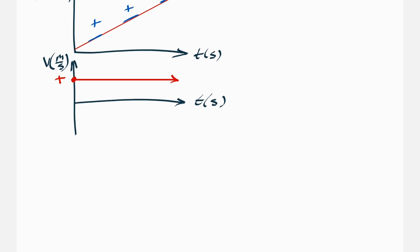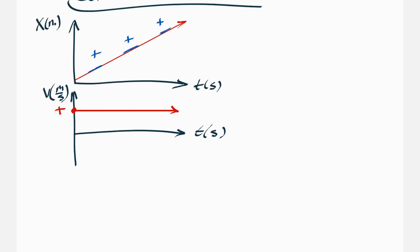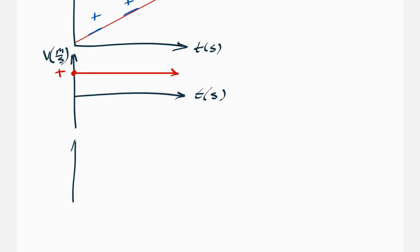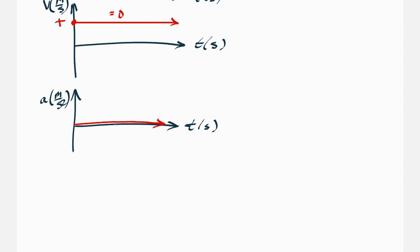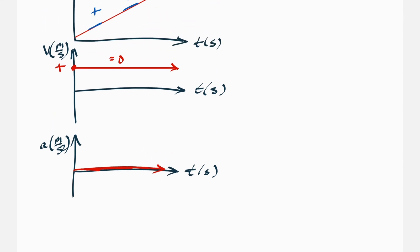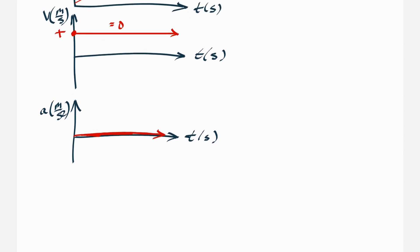What does this mean for acceleration? Since the slope equals zero for constant velocity, the acceleration is going to equal zero meters per second squared.